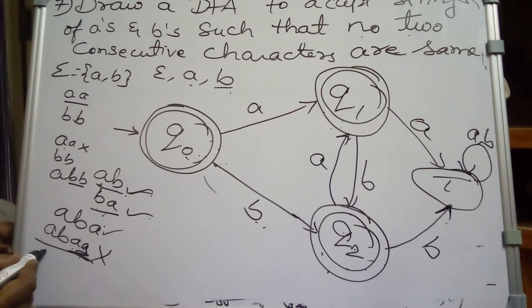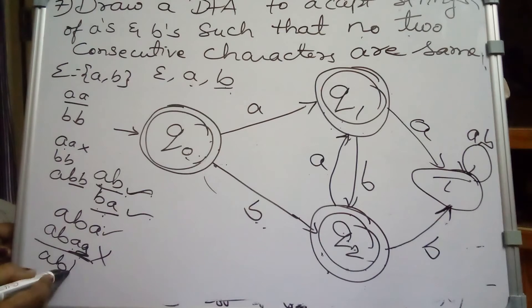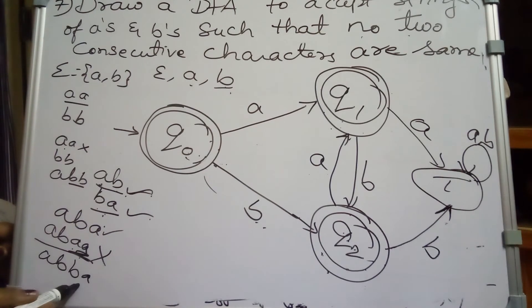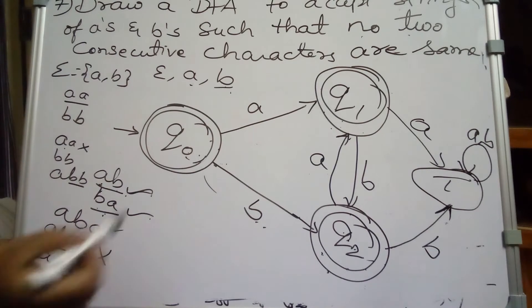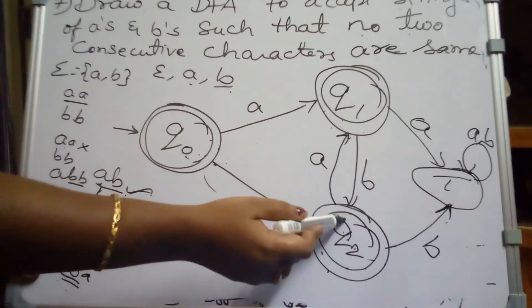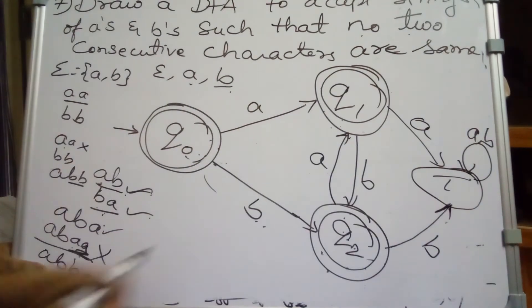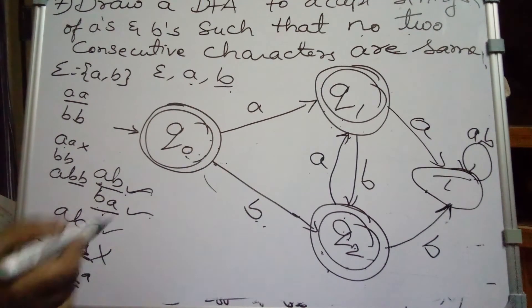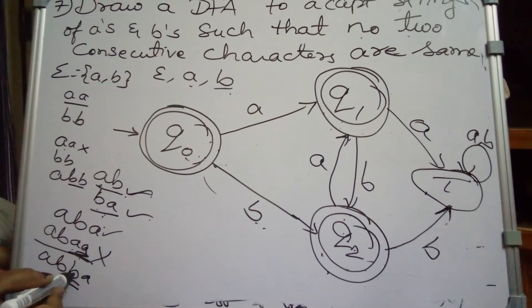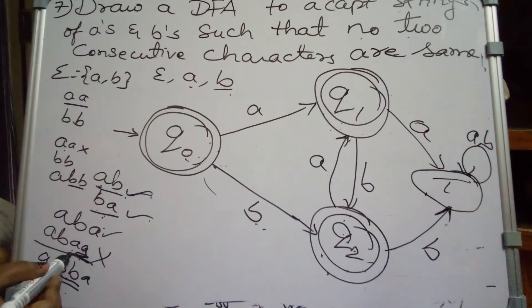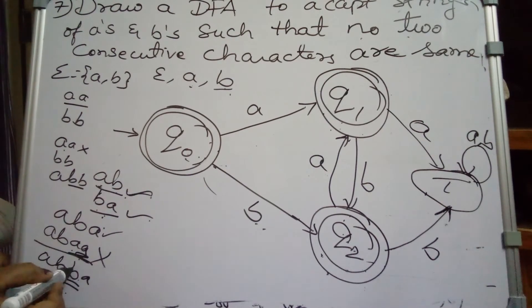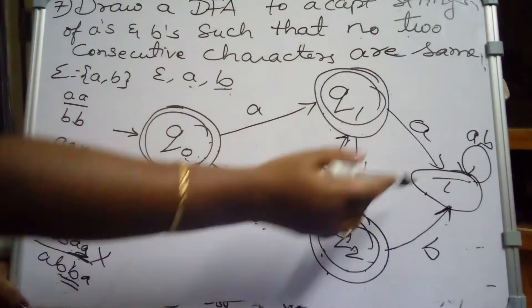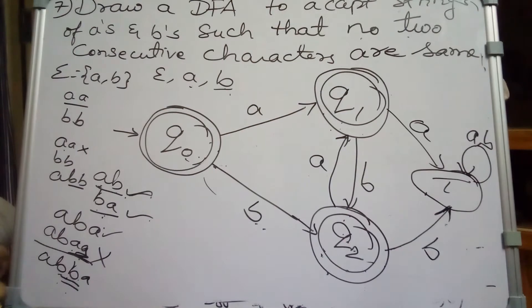For the string ABBA, again two consecutive symbols are the same. Tracing: on A go to Q1, on B go to Q2, and for the second B it goes to the trapped state — rejected. So the DFA does not accept strings having AA or BB together.